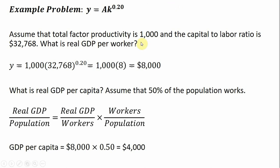Let's assume that total factor productivity, or A, is 1,000, and the capital-to-labor ratio is $32,768. What is real GDP per worker?